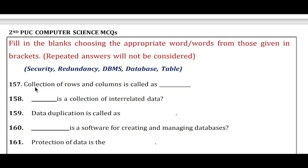Question 157: Collection of rows and columns is called — the answer is table. Question 158: Dash is a collection of interrelated data — the answer is database.